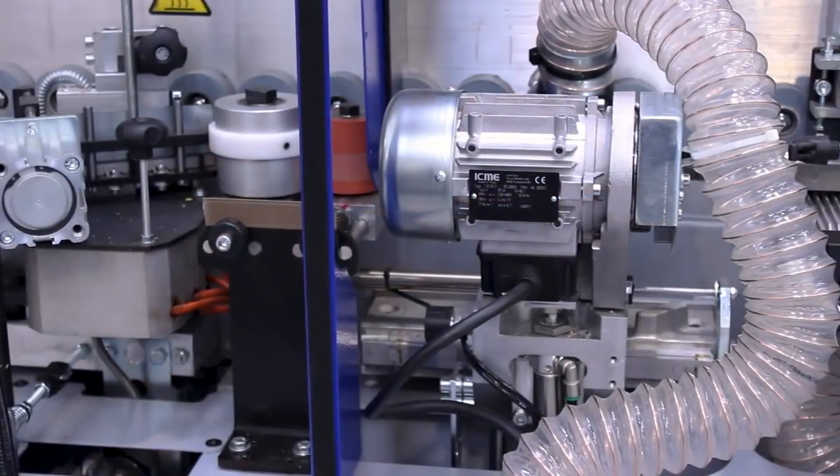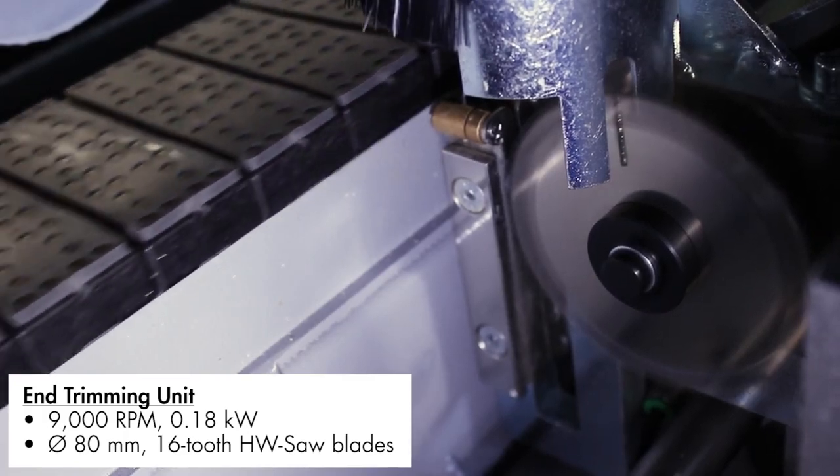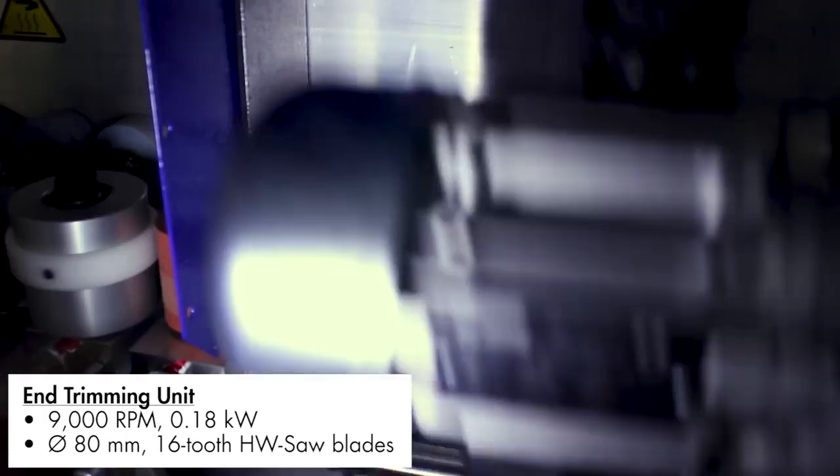The next station along is the end trimming unit. The saw blades rotate at 9,000 rpm, guaranteeing high precision regardless of the type and thickness of the wood.